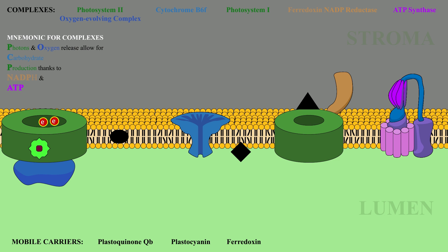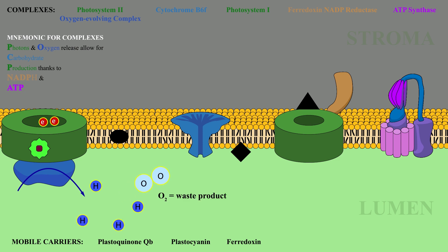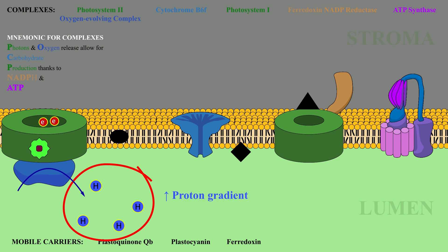Meanwhile, the oxygen-evolving complex, which is converted to an unstable state by the incoming electron, is busy splitting water molecules. This serves two purposes. Firstly, the electrons used by Photosystem II are replenished by the splitting of one water molecule. As a byproduct, once two water molecules have been split, the oxygen atoms combine into O2 — the plant considers this a waste product. The second purpose of the water splitting involves the hydrogens released into the lumen. These protons serve to increase the proton gradient, so that there is a higher concentration of protons in the lumen than in the stroma.